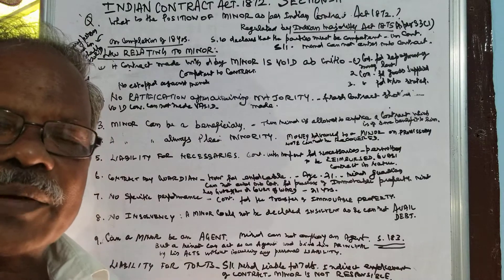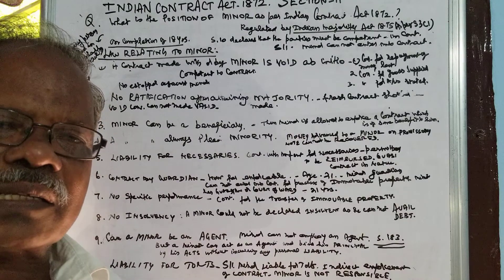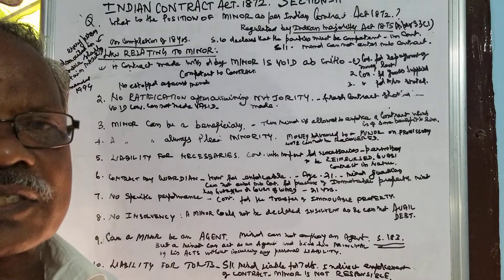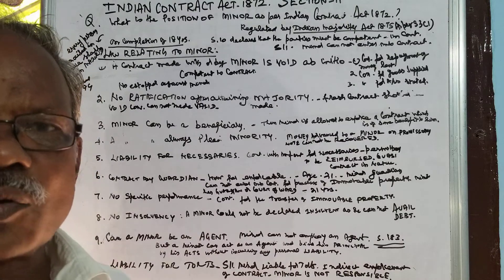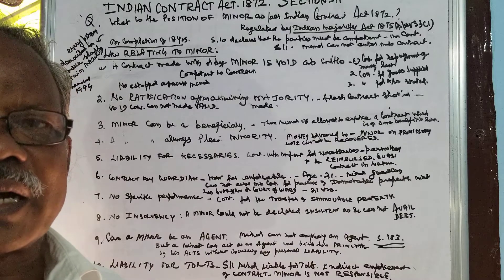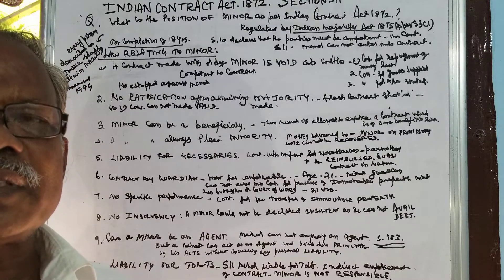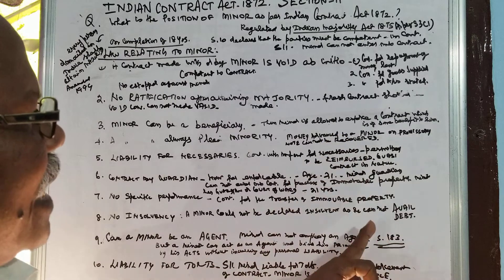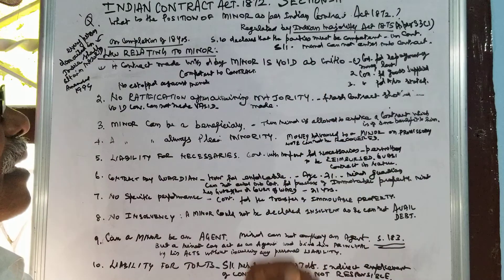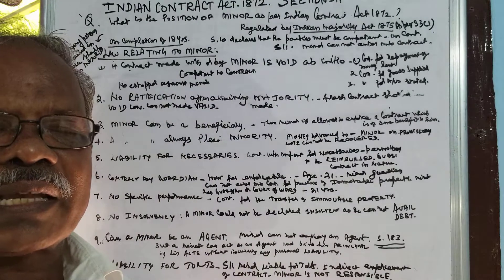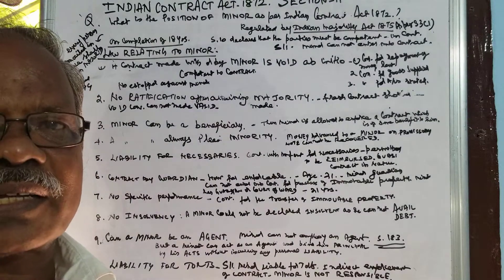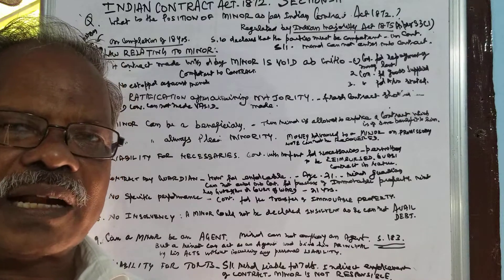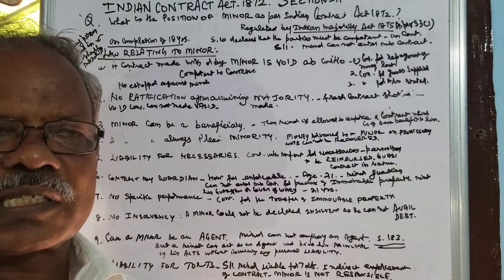Today, let us take up the Indian Contract Act 1872, in which we are going to discuss the role of a minor in contract, which is dealt with in Section 183 and Section 11. Whether a minor can enter into a contract or not, and what is the role of a minor in contract — these are the things we are going to discuss.